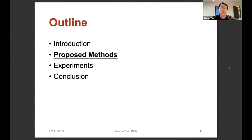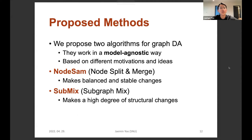Let me introduce our proposed methods. We propose two novel algorithms for graph augmentation that work in a model-agnostic way — meaning they work regardless of the graph classifier and can work with various kinds of graph classifiers because they operate based on the graph structure. They are proposed based on different motivations: the first algorithm, NodeSAM, makes balanced and stable changes, while the second algorithm, SubMix, makes a higher degree of structural changes compared to NodeSAM.